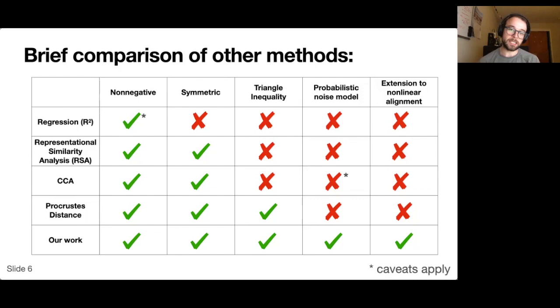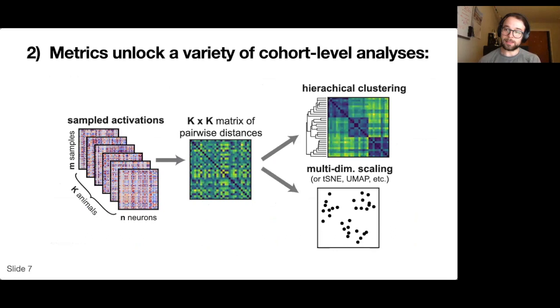Quickly, I want to move on to our second question, which is how can we analyze large cohorts of experimental subjects? Suppose we have k animals. What we can do is compute the pairwise distances between all animals. This gives us a k-by-k matrix of pairwise distances.